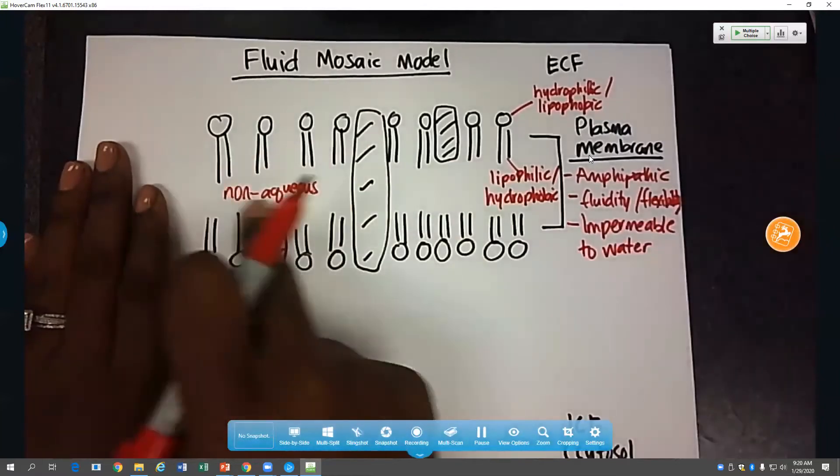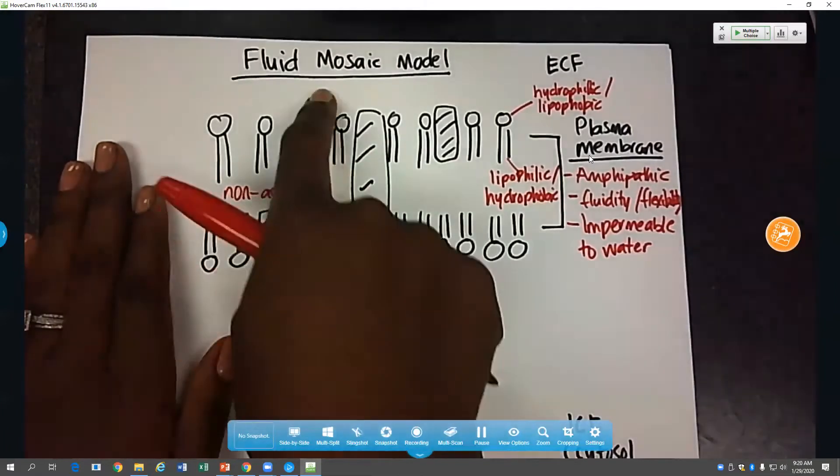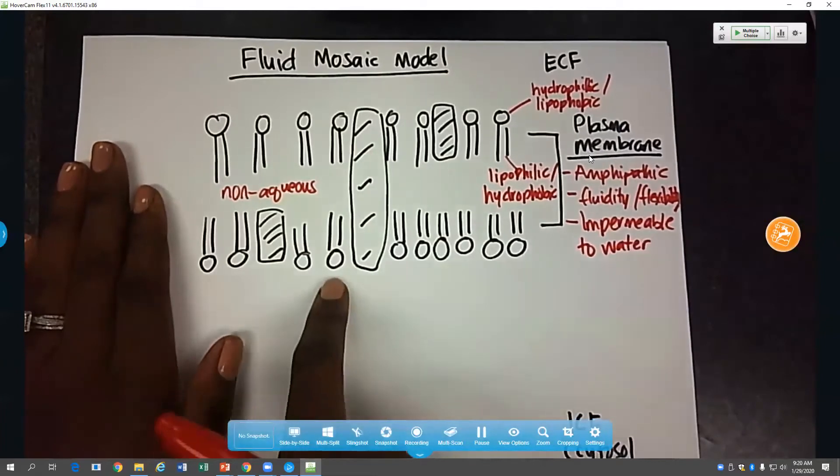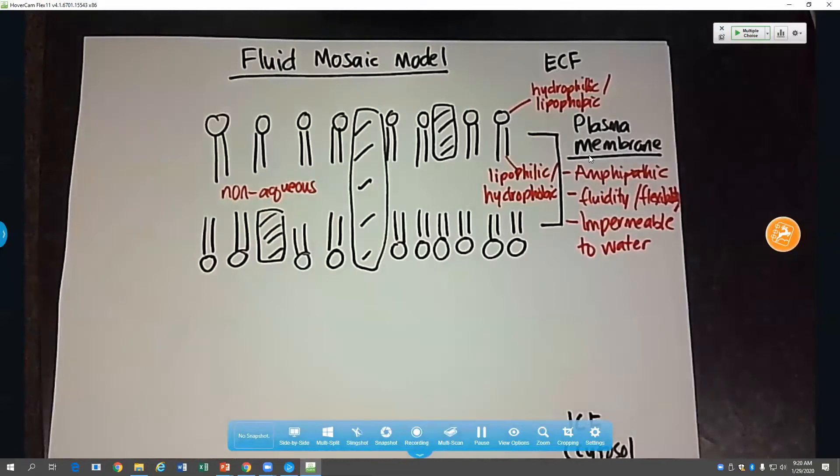And it also makes the membrane impermeable to water. This non-aqueous center means that water cannot exist in this region. And so nothing that is aqueous or lipophilic can move through the membrane. So these are polar substances, which we'll give some examples later, like water itself. So water cannot exist in here means it cannot cross the membrane.